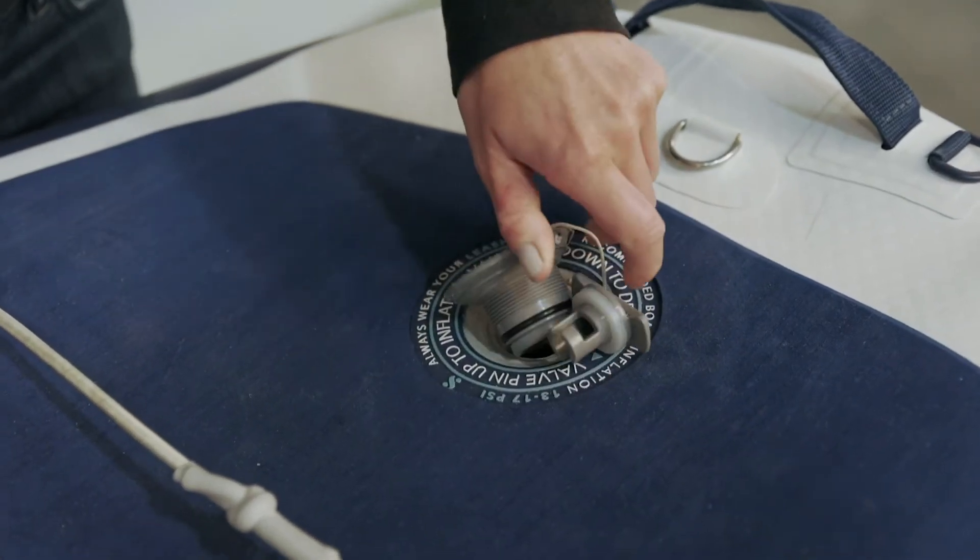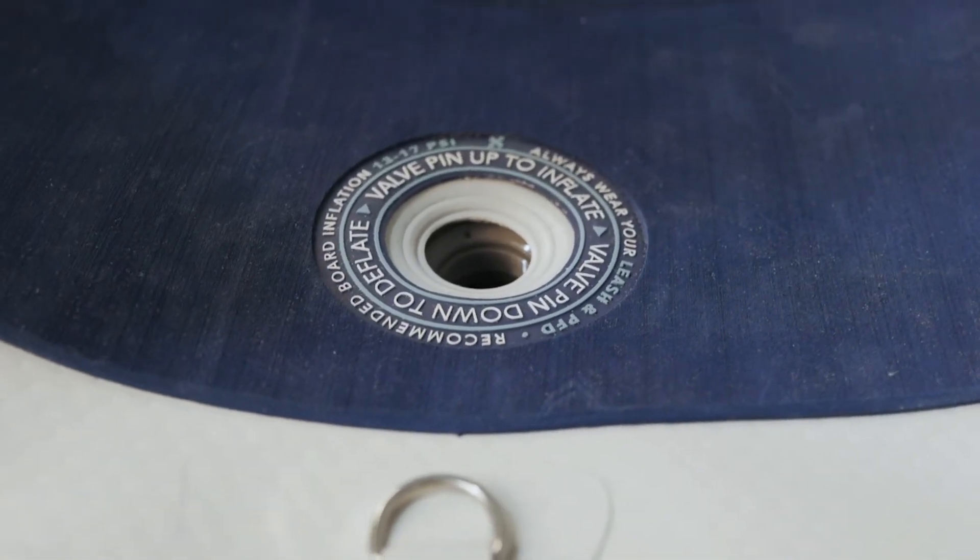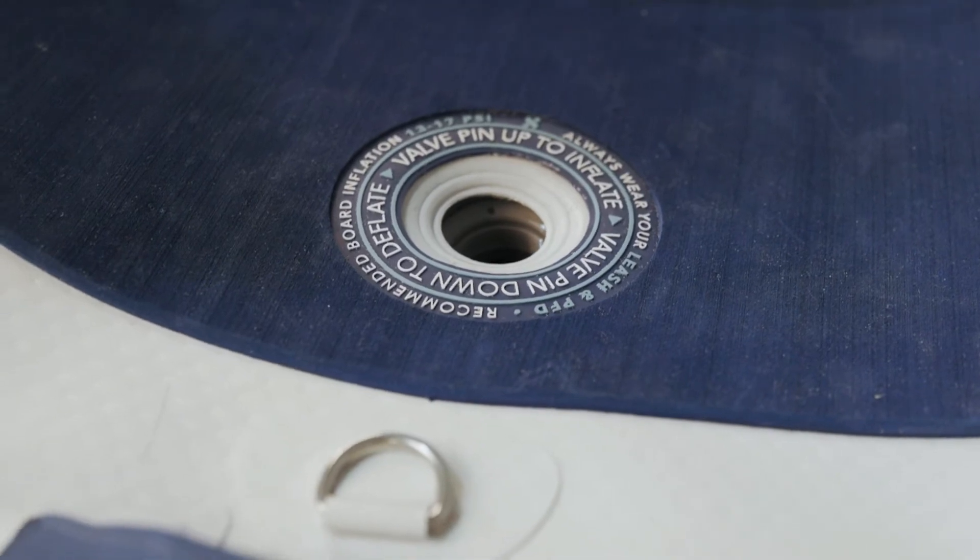Remove completely and inspect the rubber ring around the valve to be sure it's debris-free. Check to make sure the spring hinge is functioning correctly and that there are no cracks along the edges.